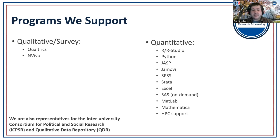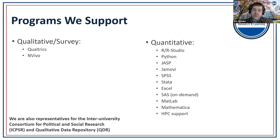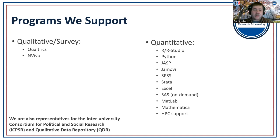In terms of software licenses: anyone can access NVivo or Qualtrics as long as you're an AU student, faculty, or staff member. If you're a faculty or staff member using an AU-owned computer, we can help install SPSS for you. We do not have individual licenses of Stata — that's on the network, so you'd have to use AU virtual applications or the high-performance computer. MATLAB and Mathematica can be installed on any personal or work computer. If you're interested in more specifics about software, please reach out to us.